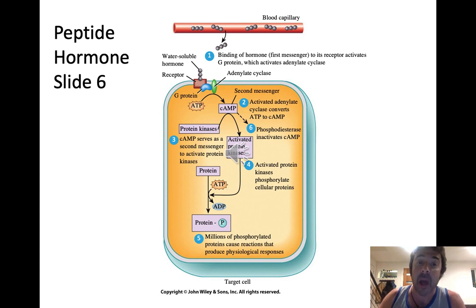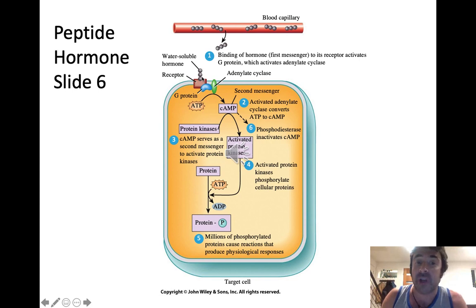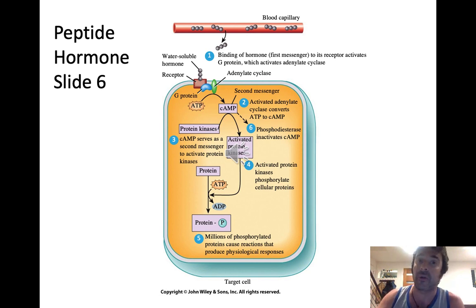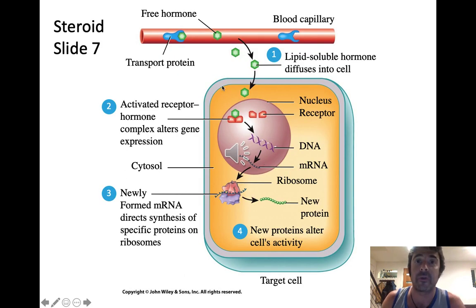These protein hormone pathways also tend to happen more quickly than steroid hormone pathways because all of these proteins have already been made — you're activating pre-existing proteins within the cell, so you can get a relatively rapid response.